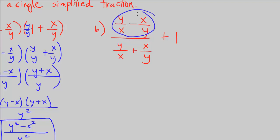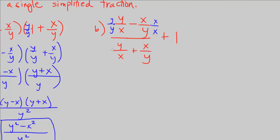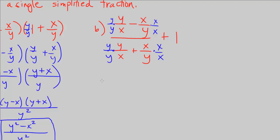In order to add the numerator, we want to multiply y over y by this term to get the denominator of x times y, and x over x by this term to get the denominator of x times y. Likewise, when adding the terms in the denominator, we multiply the first one by y over y and this one by x over x, which gives us a common denominator as well.